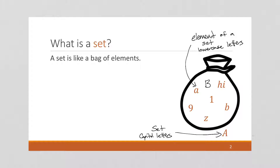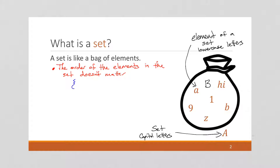A couple of important features to start with. The order of the elements in the set doesn't matter. Sets are traditionally written using curly braces. For example, this is the set containing the elements 1, 2, and 3, and the order doesn't matter — so this is equal to the set containing 3, 1, 2. It's a question of what elements are in the set, not what the order is.